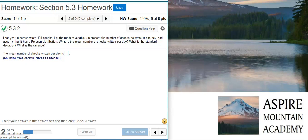Last year a person wrote 128 checks. Let the random variable X represent the number of checks he wrote in one day and assume that it has a Poisson distribution. What is the mean number of checks written per day? What is the standard deviation? What is the variance?